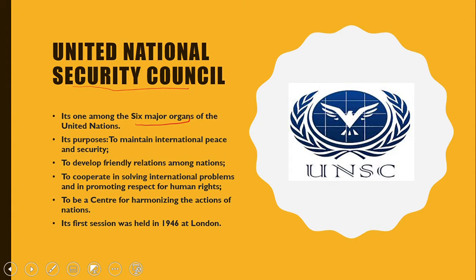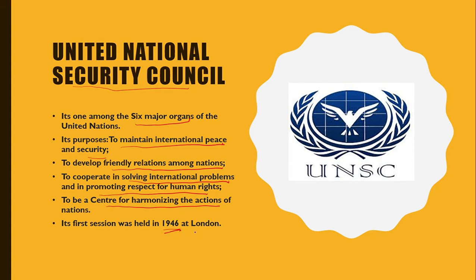The United Nations Security Council is one among the six major organs of the UNO. Its purpose is to maintain international peace and security, to develop friendly relations among nations, to cooperate in solving international problems and in promoting respect for human rights, and to be a center for harmonizing the actions of nations. Its first session was held during 1946 at London.